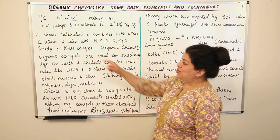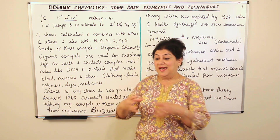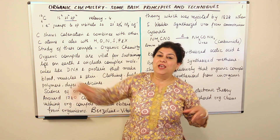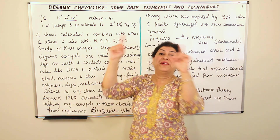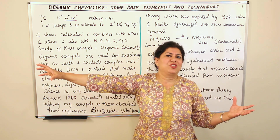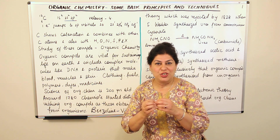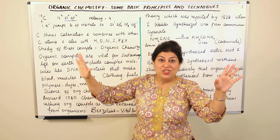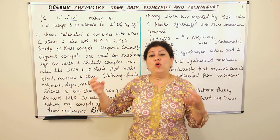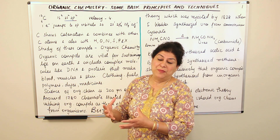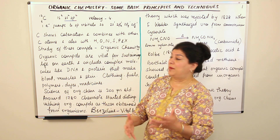Due to the property of catenation, carbon forms bonds with other carbon atoms, resulting in the formation of chains, tree-like branched structures, and rings. Carbon chains can be long, short, branched, or pretty complex. A lot of variety is possible only with carbon chains, and therefore carbon forms a lot of compounds just by combining with other carbon atoms.